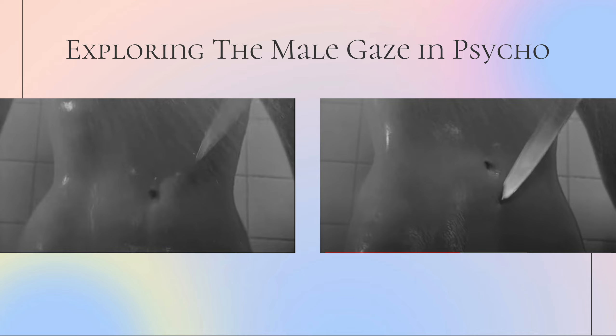Even in her death scene — her last scenes in the movie — the scene caters to the male gaze as Marion is being sexualized and objectified in her final moments. It is later revealed that Norman killed a woman he was sexually attracted to, meaning his sexual attraction was the cause of her demise and she was only a passive object who ended up being killed. Marion in Psycho is a prime example of how classic Hollywood films portray women as sexual objects, and this visual dismemberment of female bodies is very common.